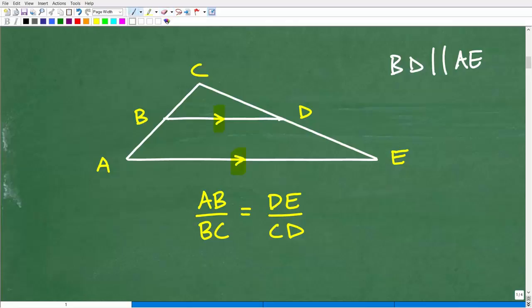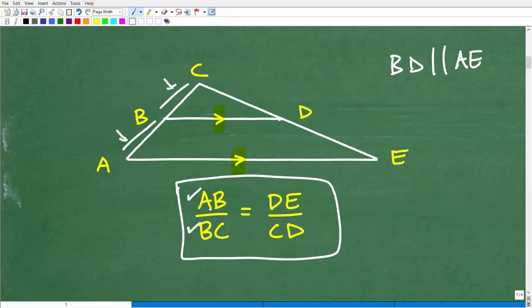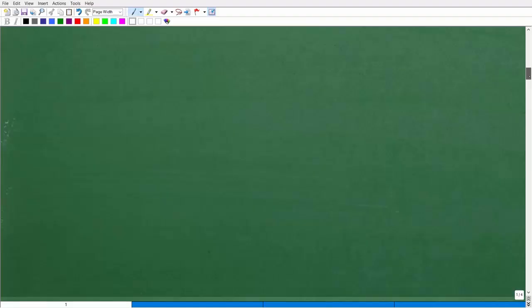All right, so when you have this situation, this is the theorem. Okay? Basically, these sides are going to be in proportion. So AB, this length, is this length divided by BC. This length right here divided by BC is the same as this length, DE, over CD. It's just basically a proportion. So remember, similar figures, similar triangles, you're thinking things are in proportion, okay? So this is what you need to know. And now that we know that, this problem becomes quite easy.